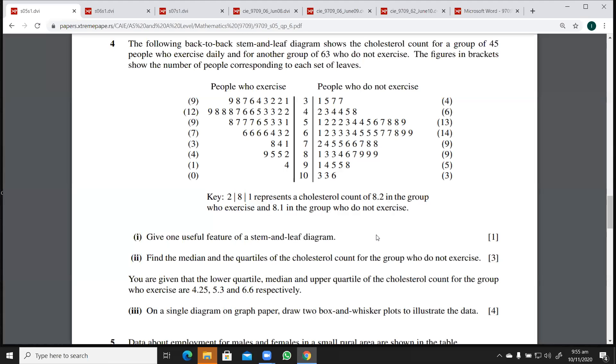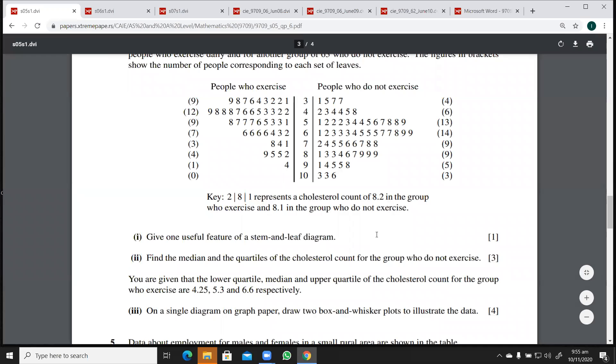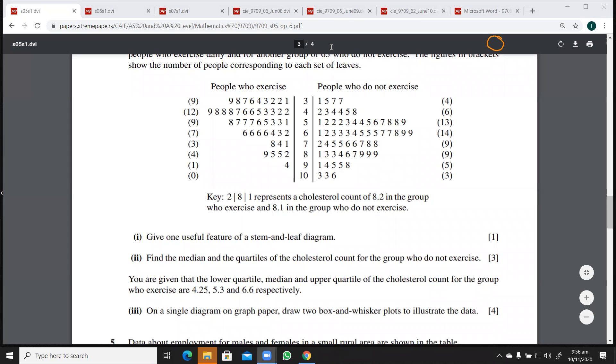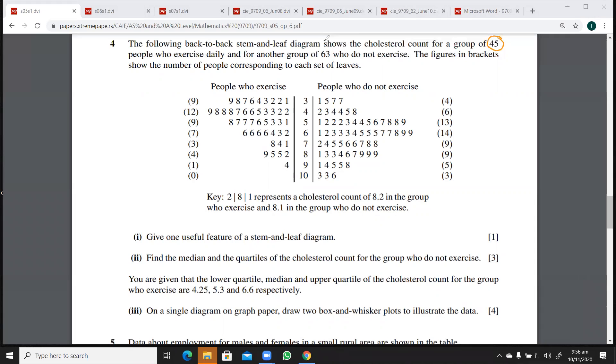Let's try this question. This is from Juno 5. So we have been given a back-to-back stem and leaf diagram, and it says this is going to show the cholesterol count for a group of 45 people who exercise and 63 who do not exercise.